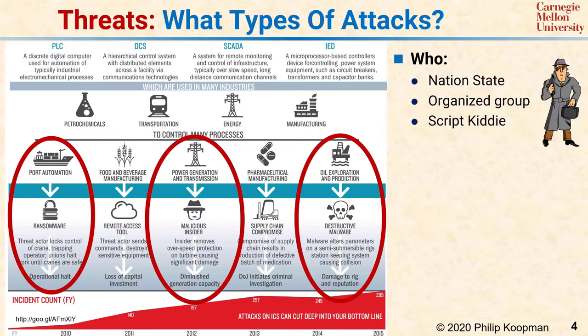Script kiddies are individuals of low ability who gain access to very sophisticated attacks by getting tools that permit them to use those attacks even if they don't really understand the details. This class of attacker is extremely important to consider because a nation-state or organized group might develop a very sophisticated attack, and that attack might become available as an automated tool at low or zero cost, and then be exploited by myriad script kiddies.